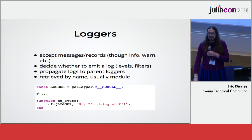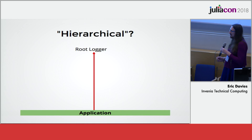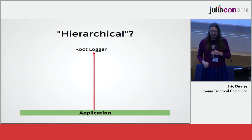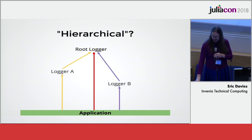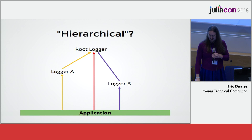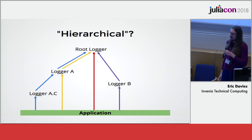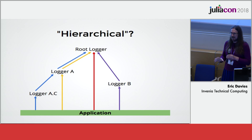I've talked about parent loggers, and I said this is a hierarchical logging library. At the basic level, an application can log to the root logger, or it can log to a specific logger, which will by default propagate up to the root logger as well. All loggers can have children, which by default propagate up messages to their parents. This is useful for modules and subsystems where you can turn on and off verbosity for different components of your application.